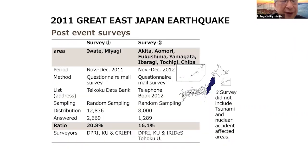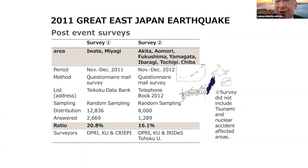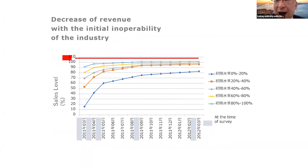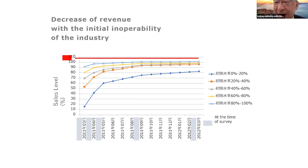We understand the huge economic loss driven by this earthquake. After the earthquake, several research groups in Japan initiated surveys to measure so-called indirect losses. Two famous post-event surveys were carried out, and from the resulting tables we can trace how Japanese local economies declined and recovered from the tragedies, including the decrease in company revenues and initial inoperability of industries.